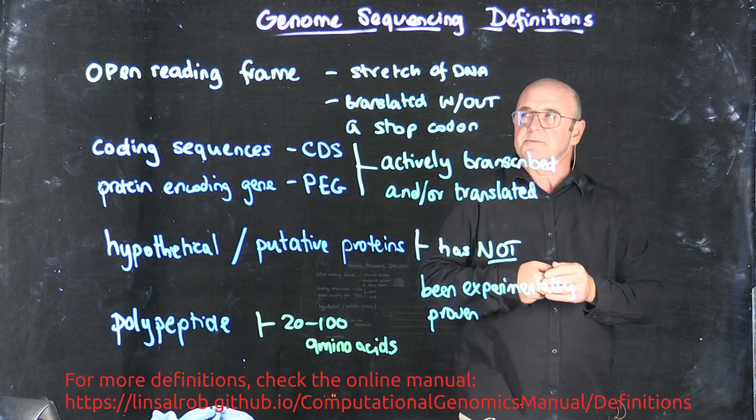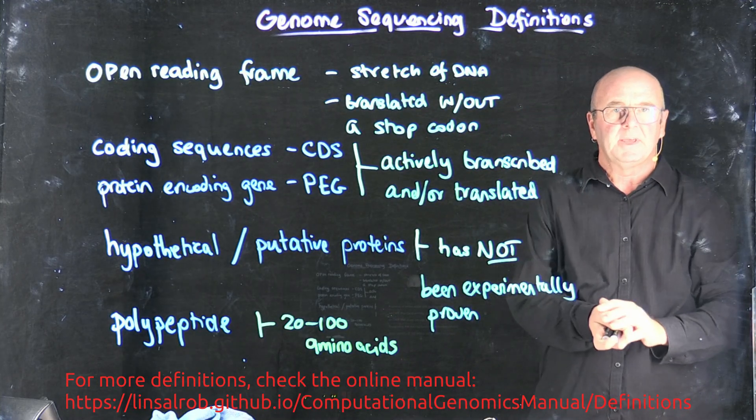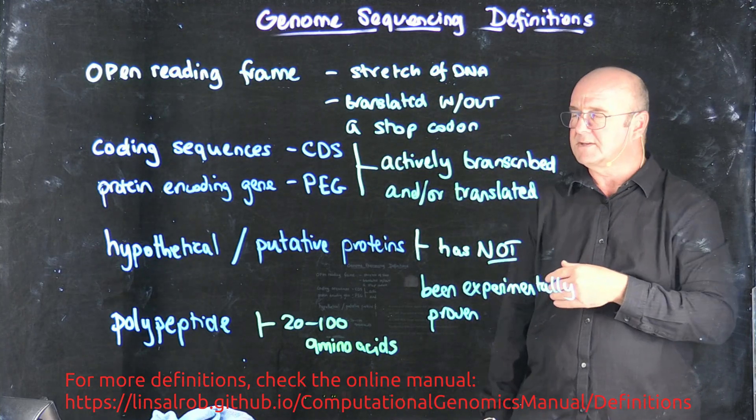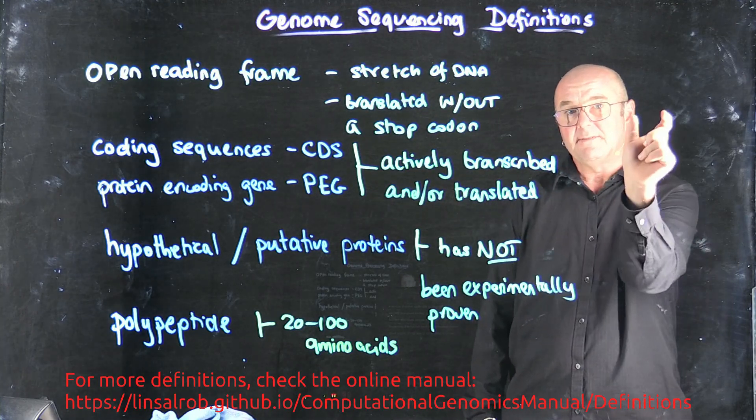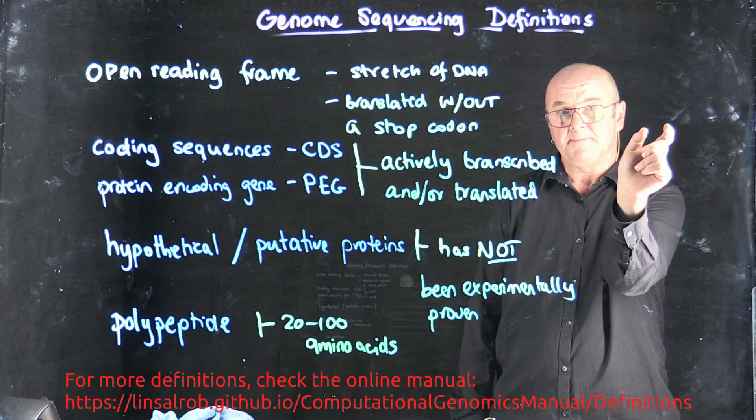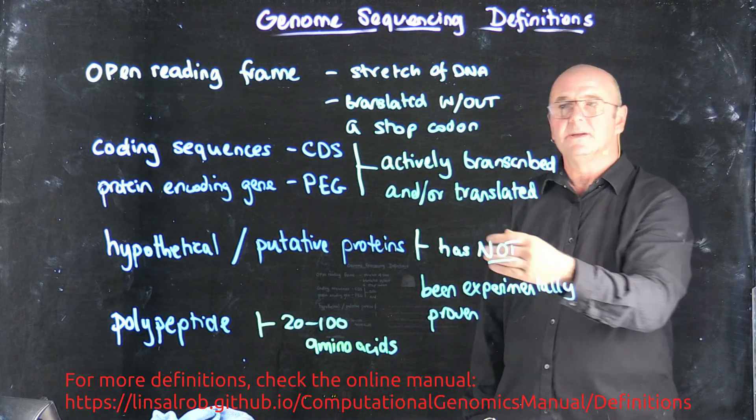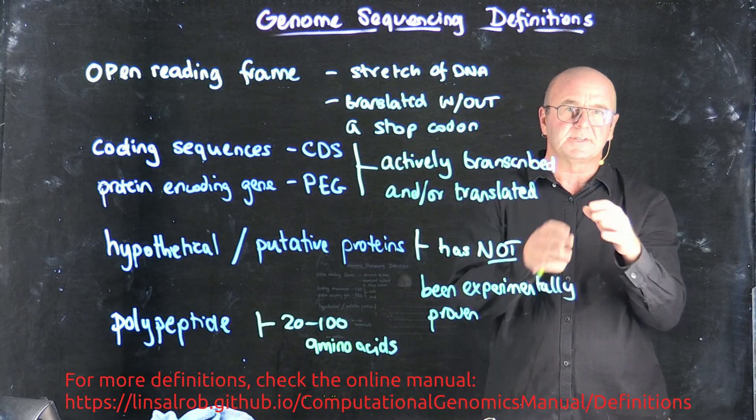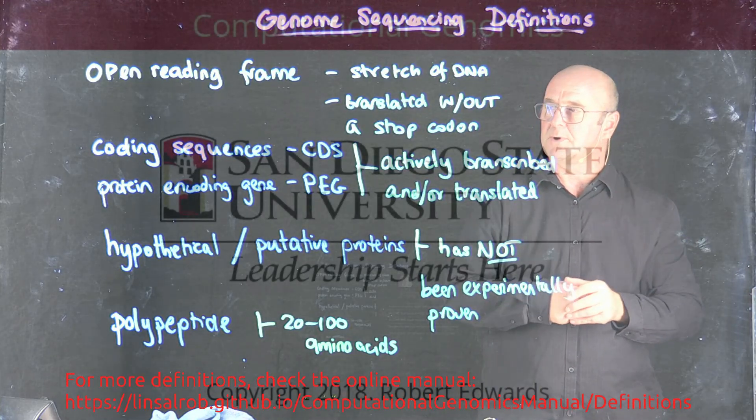So there's a connection between all of these things. An open reading frame is a stretch of DNA that could potentially encode a coding sequence or a protein encoding gene. If you have a short open reading frame, it might encode a polypeptide. A polypeptide can also be part of a protein encoding gene or a coding sequence, just a region of it, perhaps a domain or an area that's involved in interacting with in some way.